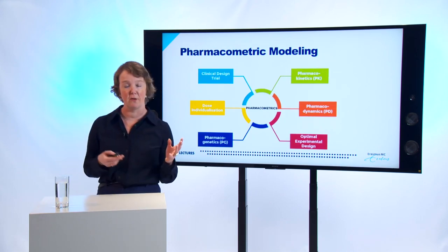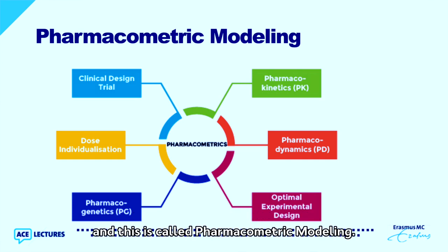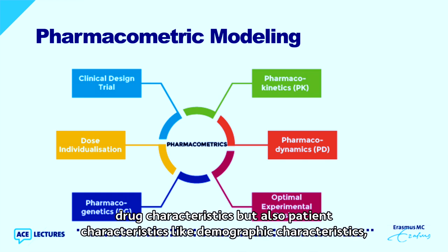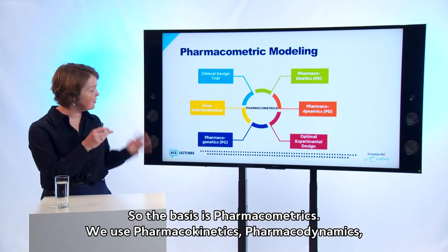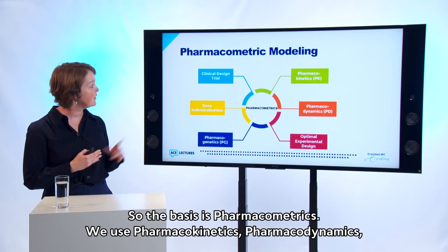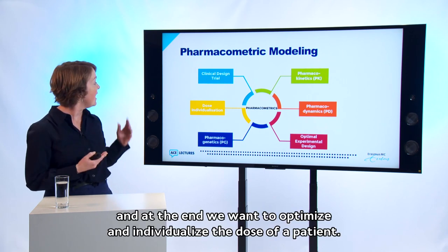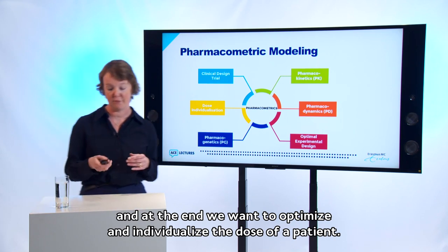How do we make these models? We use all the characteristics patients have — this is called pharmacometric modeling. In pharmacometric modeling you combine drug characteristics and patient characteristics such as demographics. The basis is pharmacometrics: we use pharmacokinetics, pharmacodynamics, and pharmacogenetics, and at the end we want to optimize and individualize the dose of a patient.